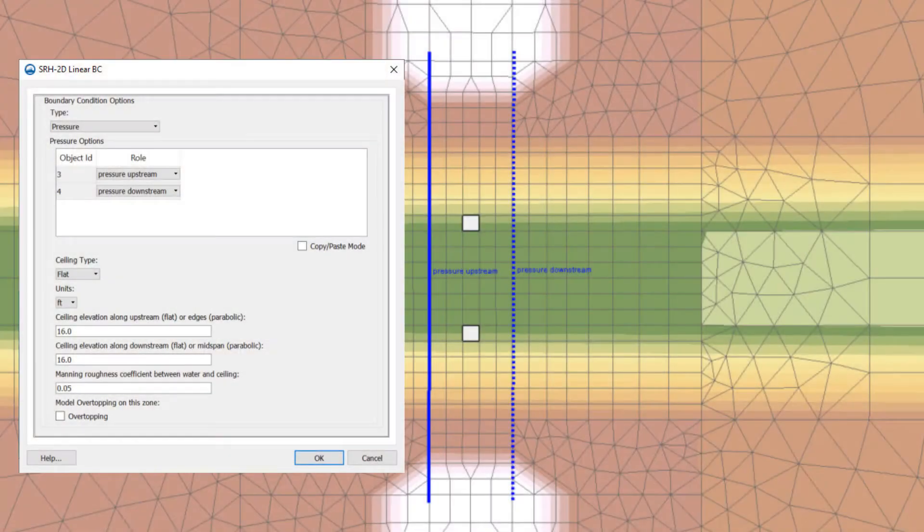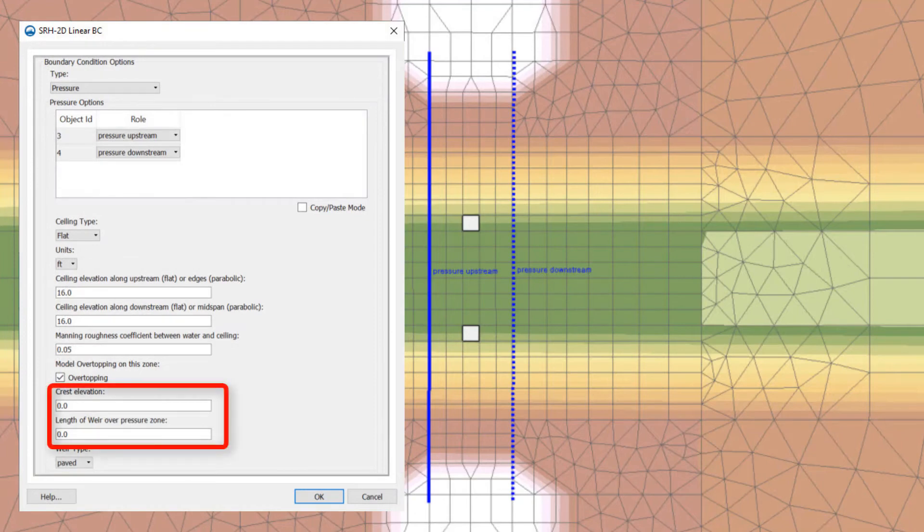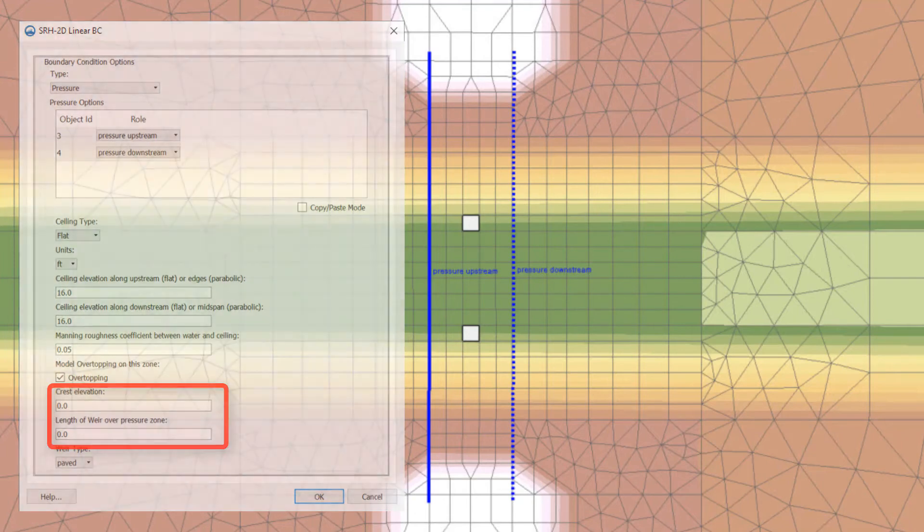The low chord elevation is entered to inform the model when the deck will start impacting the water surface. The low chord can be a single elevation or a complex shape. If flow is expected to overtop the bridge deck, then SRH can use the bridge crest elevation to calculate weir flow over the deck. The weir flow calculation will remove flow from the upstream face of the bridge and return it at the downstream face of the bridge.